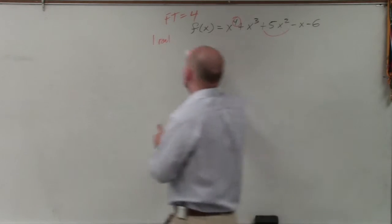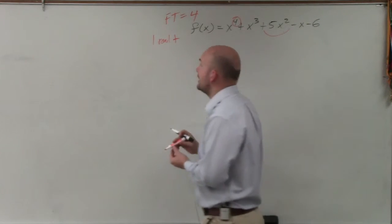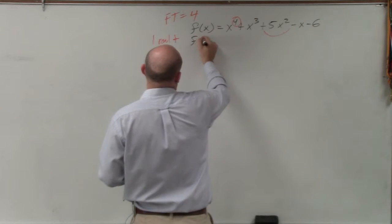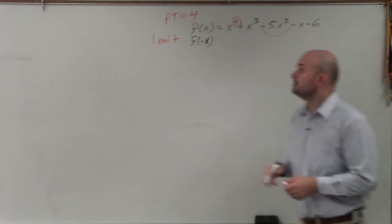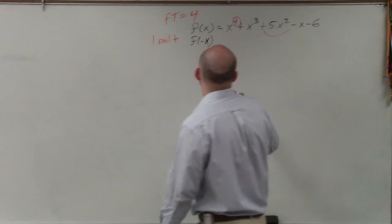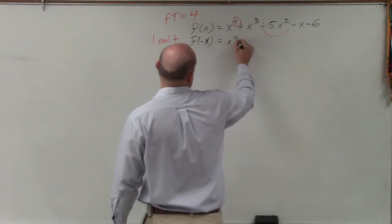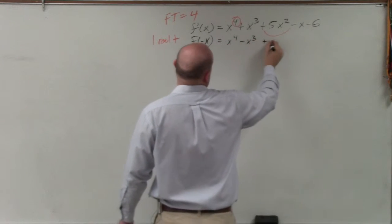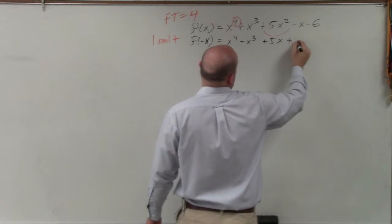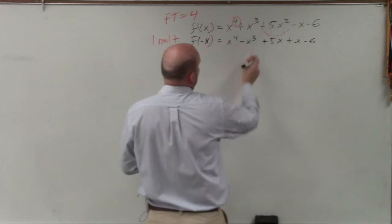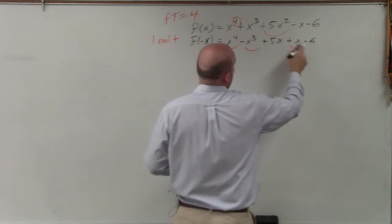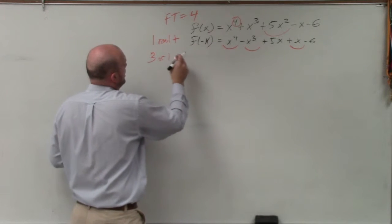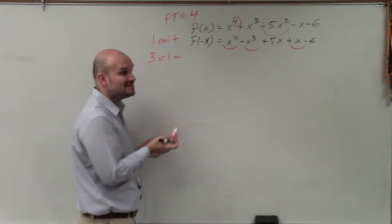Now, remember to do negative, you would have to do f of negative x, right? And actually, we can do that real quick. Let's see, that's going to be x to the fourth minus x cubed plus 5x plus x minus 6. So negative, you have 3 or 1 negative real zeros, which makes sense, right?